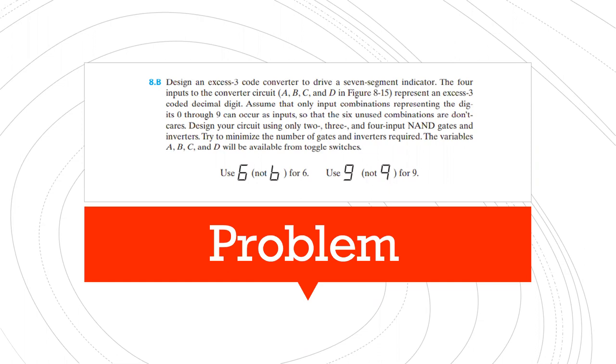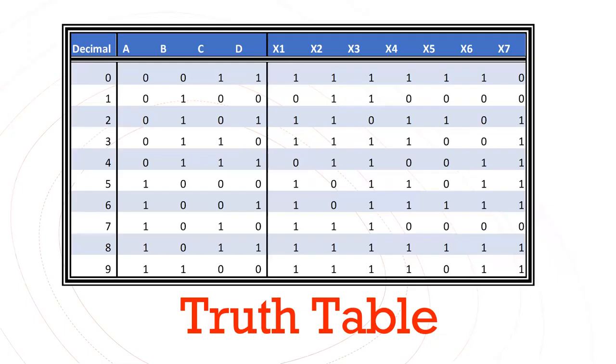So what an XS3 code converter is, and this is the basic definition, is a non-weighted code used to express coded decimal numbers. It is a self-complementary binary coded decimal and numerical decimal which has base representation. So basically, what we did is we added three to each one of the rows and then turned it into a binary digit.